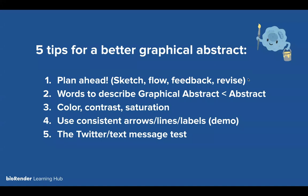These are the five general concepts we'll cover. One is to plan ahead. Two is thinking about translating a graphical abstract into words — the interplay between the graphical abstract and the abstract itself. Three is color contrast and saturation. Four is consistent use of arrows, lines, and labels. And five is what we call the Twitter slash text message test, which I'll show you at the very end.